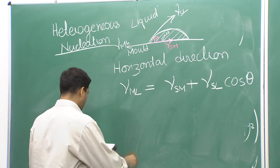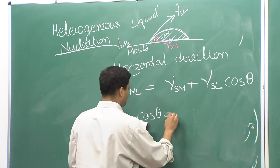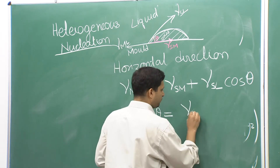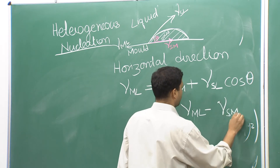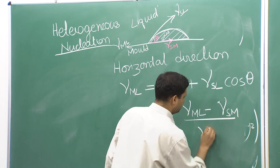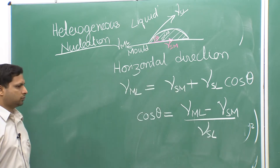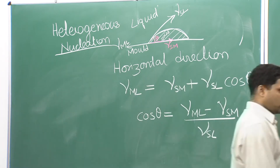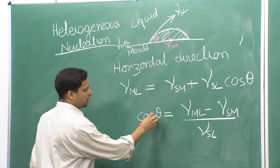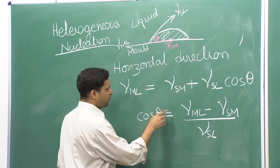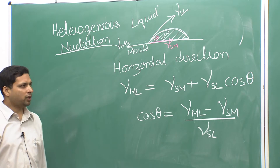Or in other words, we can write cos θ = (γ_ML − γ_SM) / γ_SL. So this cos θ term represents a relationship between the three different surface energy terms — that is one thing.